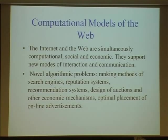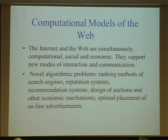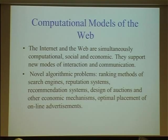If the Turing machine was the standard model of computation in the first 50 years of computer science, perhaps the web will be the standard model of computation in the next decades, because our attention is turning to systems involving many agents — not just something with a single input and output and deterministic behavior. As we study the internet and the web as systems that are simultaneously computational, social, and economic, we get many algorithmic problems: ranking methods for search engines, reputation systems, recommendation systems, design of auctions and other economic mechanisms, and optimal placement of advertisements.